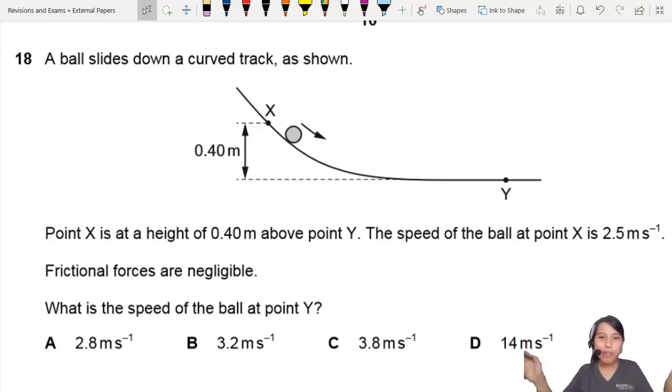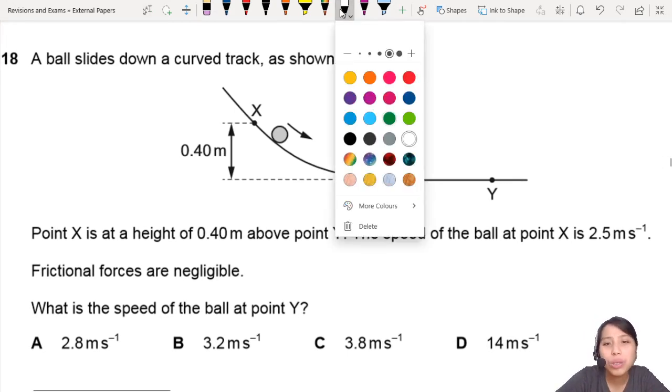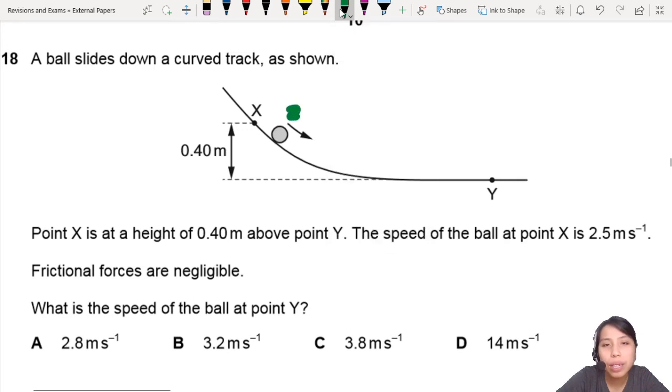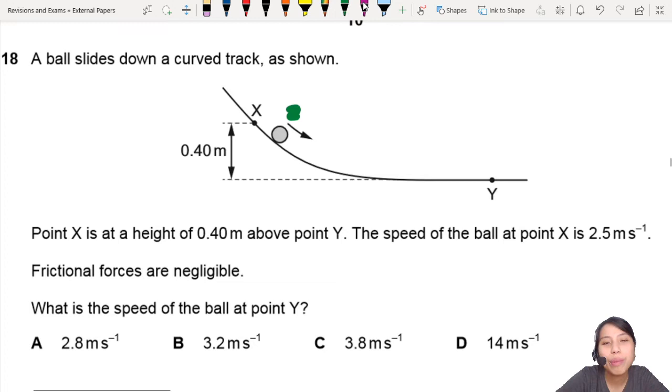This is like a roller coaster, very fun. The ball slides down and goes somewhere else. Point X is at the height where the speed of the ball is 2.5 meters per second. So I should probably label that down in case I forget. This is way too big. I should probably label it down 2.5 meters per second.